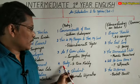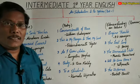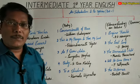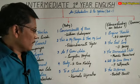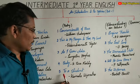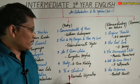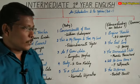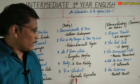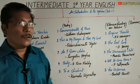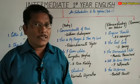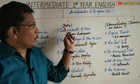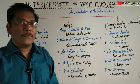The third one is 'As I Grew Older', written by Langston Hughes. The fourth one is 'Body', written by K. Shivareddy. And finally, the fifth one is 'To a Student', written by Kamala Wijaratne. These are the five poems given in the Poetry section.